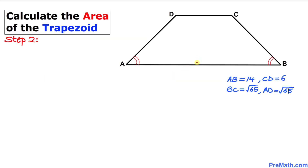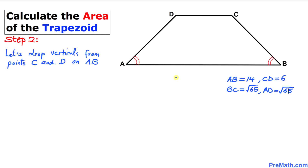The length of side AB is 14, the length of CD is 6, and the length of BC and AD is square root of 65. In the next step, let's draw perpendiculars from point C and point D down onto the horizontal AB, giving us 90-degree angles. I'll call these new points E and F.